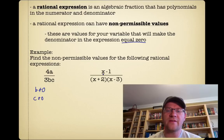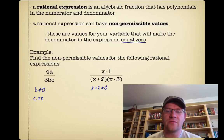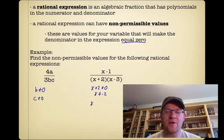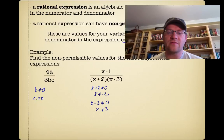Our second example is x minus 1 over (x plus 2)(x minus 3). We know that x plus 2 cannot equal zero, which means x cannot equal negative 2 — we can just create a little equation and solve that. Then x minus 3 cannot equal zero, so x cannot equal 3. So there are our two non-permissible values.